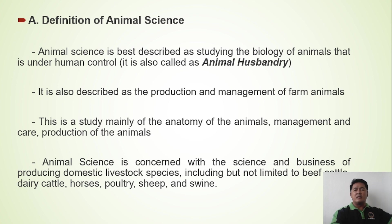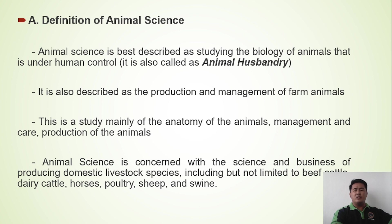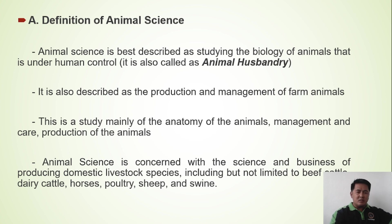When I graduated in my college years, my major was animal husbandry. But now it has already been changed to animal science. Animal husbandry and animal science are the same. It is also described as the production and management of farm animals.